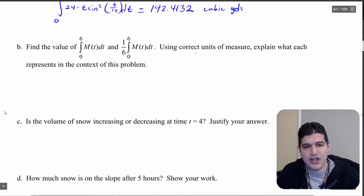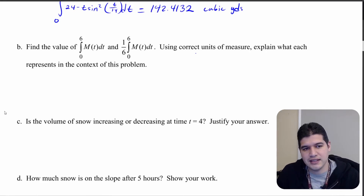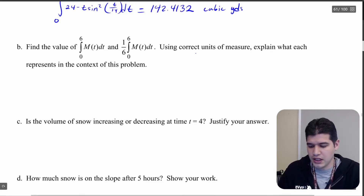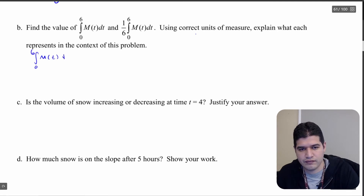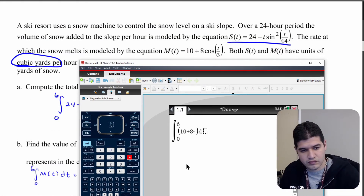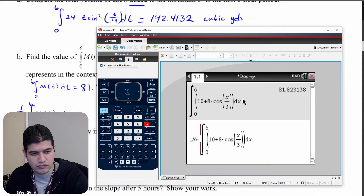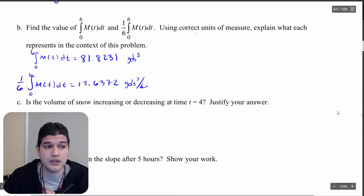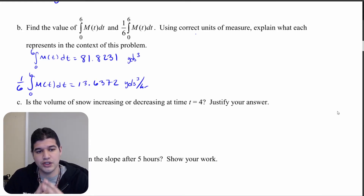Now we want to find the value of the integral from zero to six of m(t) dt, and also one-sixth times the integral from zero to six of m(t) dt, and explain what they mean in context with correct units. The calculations are essentially given to us, but we do have to say what they mean. The first one, the integral from zero to six, gives us 81.8231 cubic yards, and the second one with the one-sixth gives us 13.6372 cubic yards per hour.